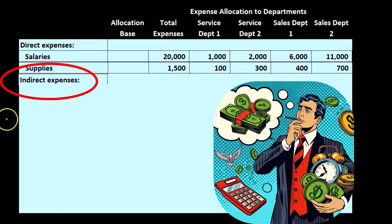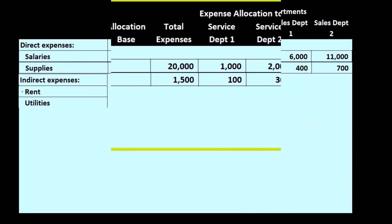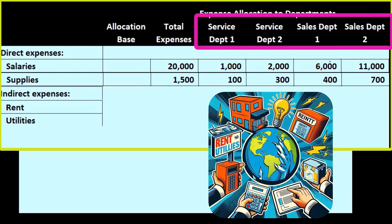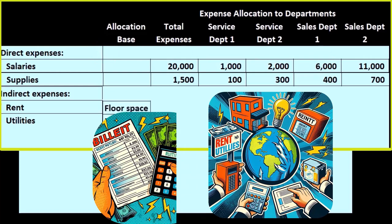Then we have the indirect expenses — examples of indirect expenses. Remember that the indirect expenses are those that we don't know how to allocate them. We know what the total is, but not where to allocate them. We're going to be using rent and utilities, assuming these four departments are in the same building. We pay rent and utilities on that building but can't break them out between departments easily, so we have totals that we need to allocate out. We can use an activity base to do so.